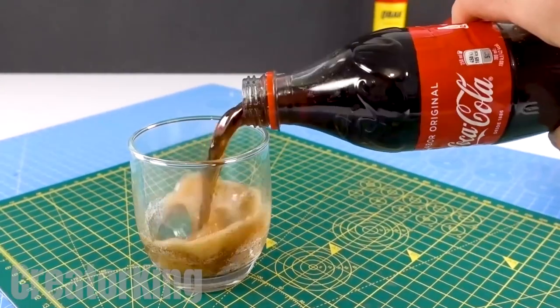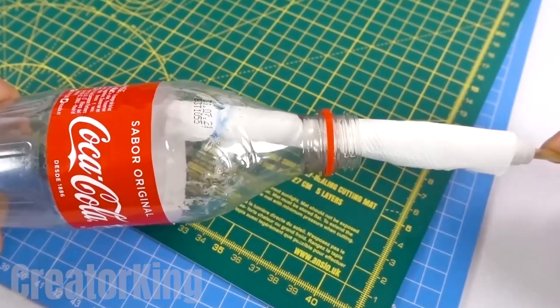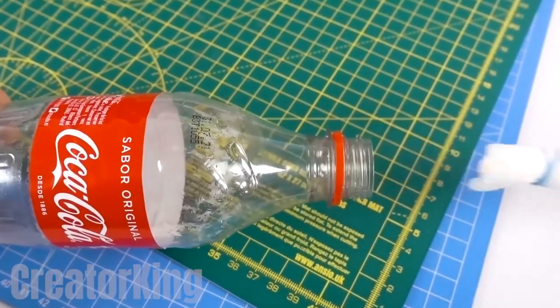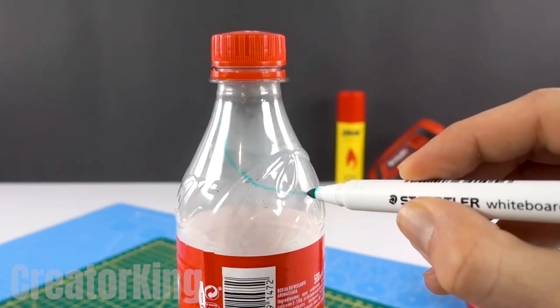After drinking the sugary and refreshing soda, we'll clean out the inside of the bottle with the help of a thin and long object and then draw a zig-zag line that we'll cut along very carefully and accurately.